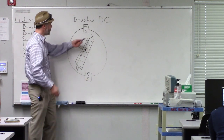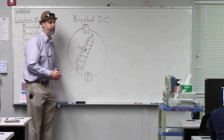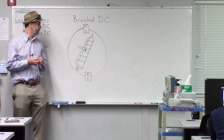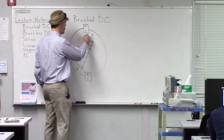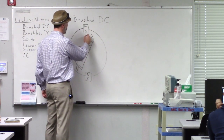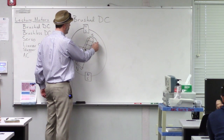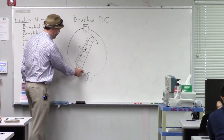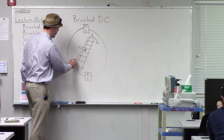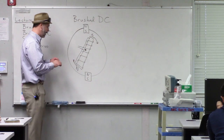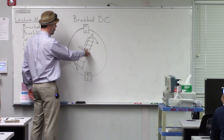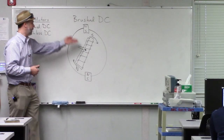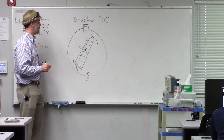Now we have a south magnetic pole next to the permanent south pole on the outside. Since similar poles repel each other, that creates a force — the south poles push each other apart, pushing the magnet around. Similarly, the north poles at the bottom repel each other and push that side around too. Together, these two forces act to rotate the axle, and that's how this brushed DC motor starts to rotate.